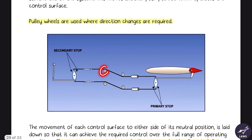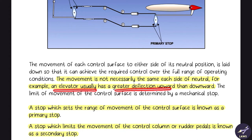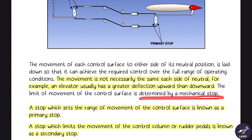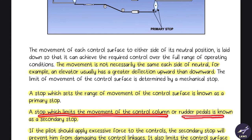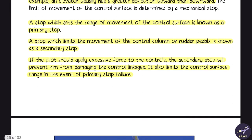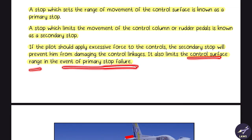Pulley wheels are used where direction changes are required. The movement of a control surface is not necessarily the same on each side of neutral — for example, an elevator uses greater deflection upward than downward. The limit of movement is determined by mechanical stops. A primary stop sets the range of movement of the control surface. A secondary stop limits the movement of the control column or rudder pedals, preventing damage to control linkages from excessive force and also limiting the control surface range in the event of a primary stop failure.